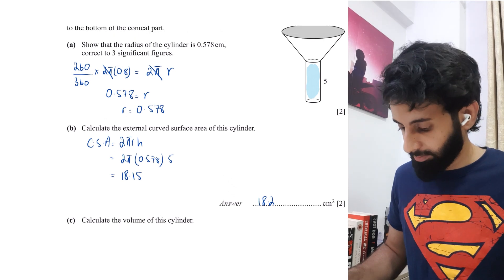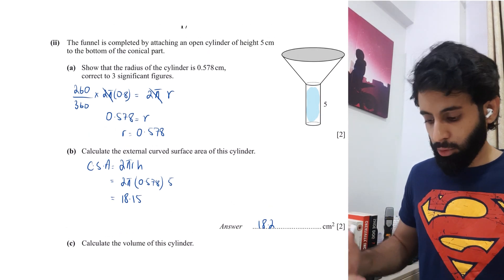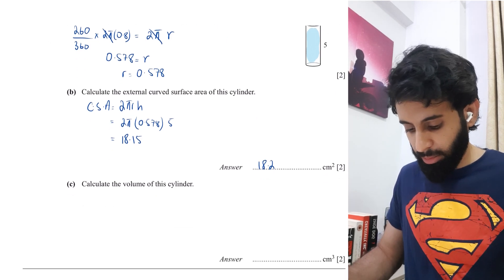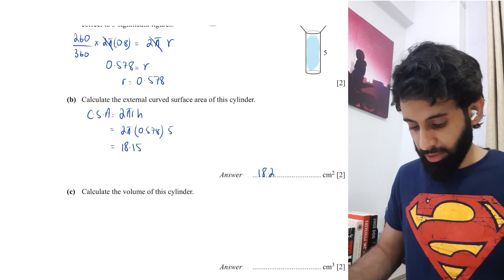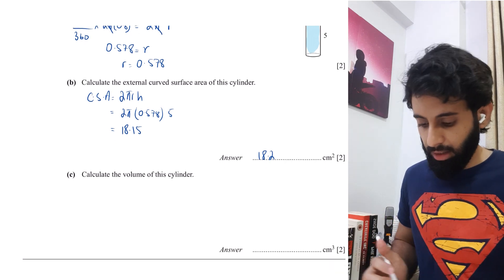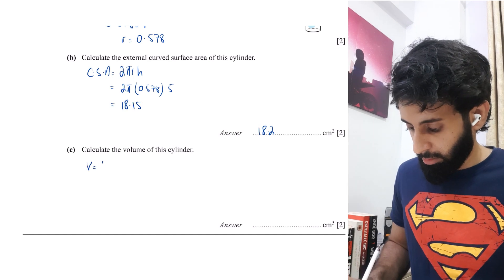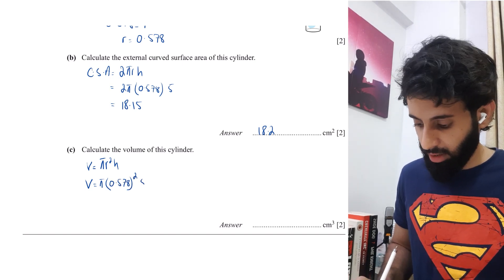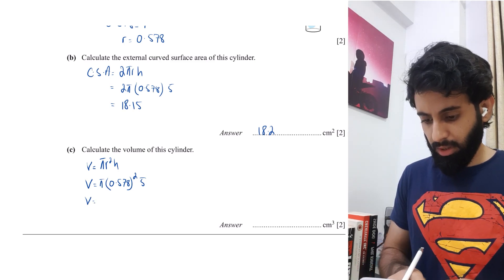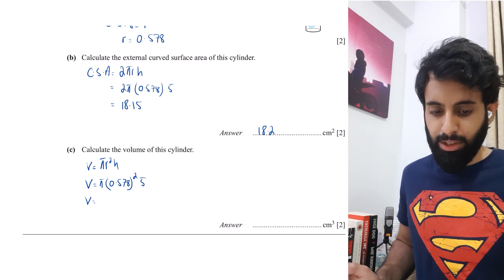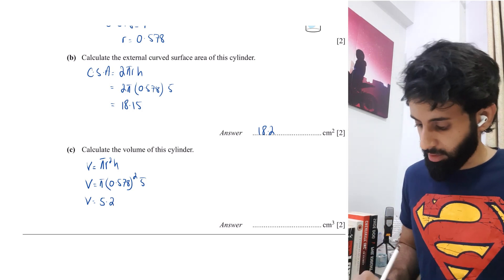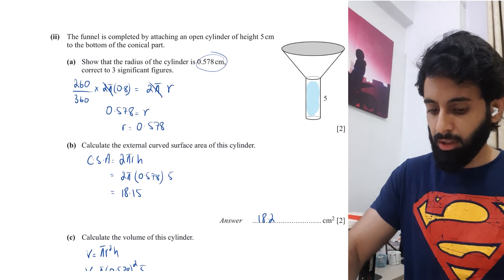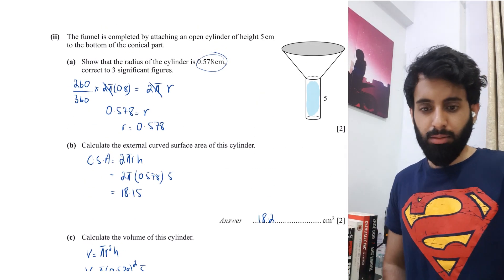Something to note: if you couldn't solve the previous part, you can still attempt parts (b) and (c) using the given radius of 0.578 cm and height of 5 cm to score some marks. You can also calculate the volume of the cylinder: V = πr²h = π × 0.578² × 5 = 5.25 cm³ correct to three significant figures. That brings us to the end of this video — hopefully you understood everything. See you in the next one!